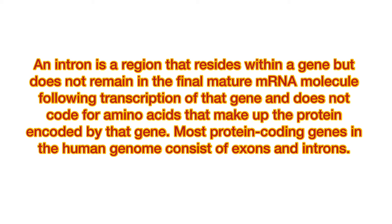It is noted that the specific sequence of intronic splicing elements and the number of nucleotides between the branch point and the nearest 3' acceptor site affects splice site selection. Also, point mutations in the underlying DNA or errors during transcription can activate a cryptic splice site in part of the transcript that usually is not spliced. This results in a mature messenger RNA with a missing section of an exon. In this way, a point mutation, which might otherwise affect only a single amino acid, can manifest as a deletion or truncation in the final protein.